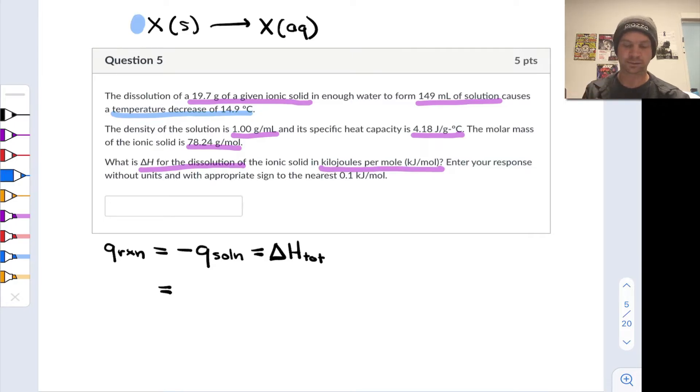We've got a temperature decrease of 14.9 degrees C, so delta T for the solution is negative 14.9 degrees Celsius. You want to be careful with the signs here. Temperature decrease indicates that the solution is cooling down. We know from the given problem that the specific heat here is 4.18 joules per gram degrees C.